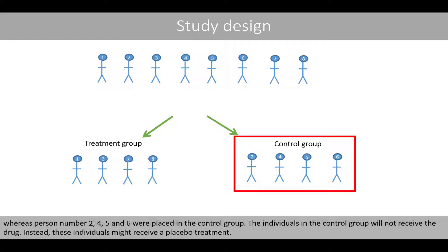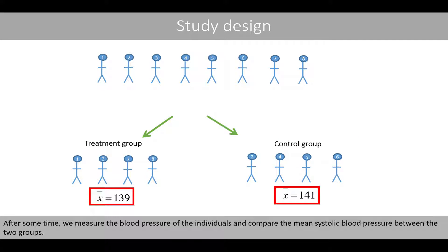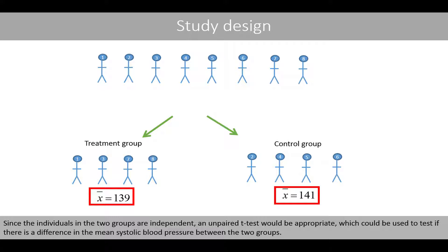The individuals in the control group will not receive the drug. Instead, these individuals might receive a placebo treatment. After some time, we measure the blood pressure of the individuals and compare the mean systolic blood pressure between the two groups. Since the individuals in the two groups are independent, an unpaired t-test would be appropriate, which could be used to test if there is a difference in the mean systolic blood pressure between the two groups.